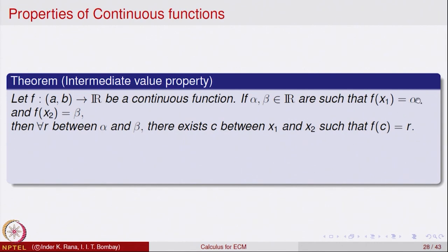That means the function takes the values alpha and beta at some points x₁ and x₂ in the domain. Then the claim is that for every real number r between alpha and beta, there is a number c between x₁ and x₂ such that f(c) = r. If two values alpha and beta are taken by a continuous function, then every other value in between should also be taken.